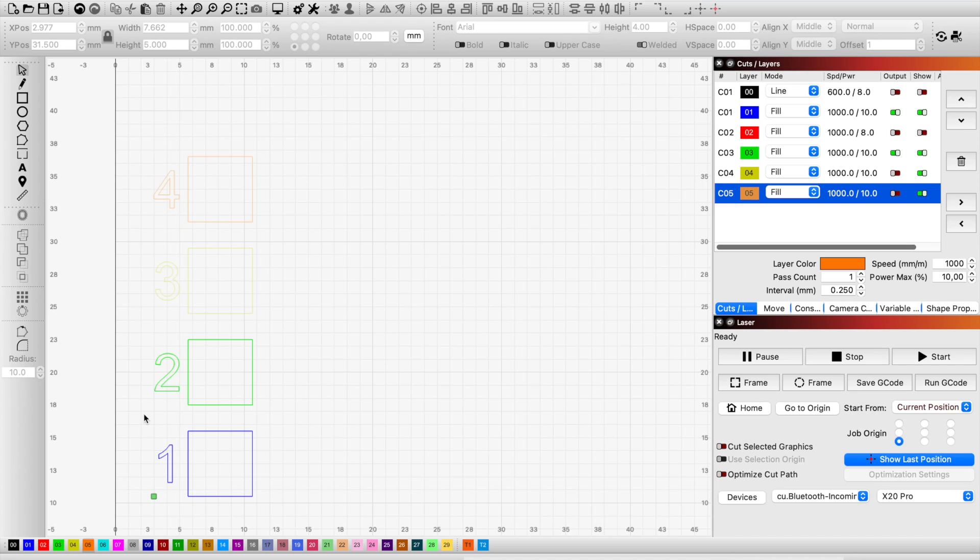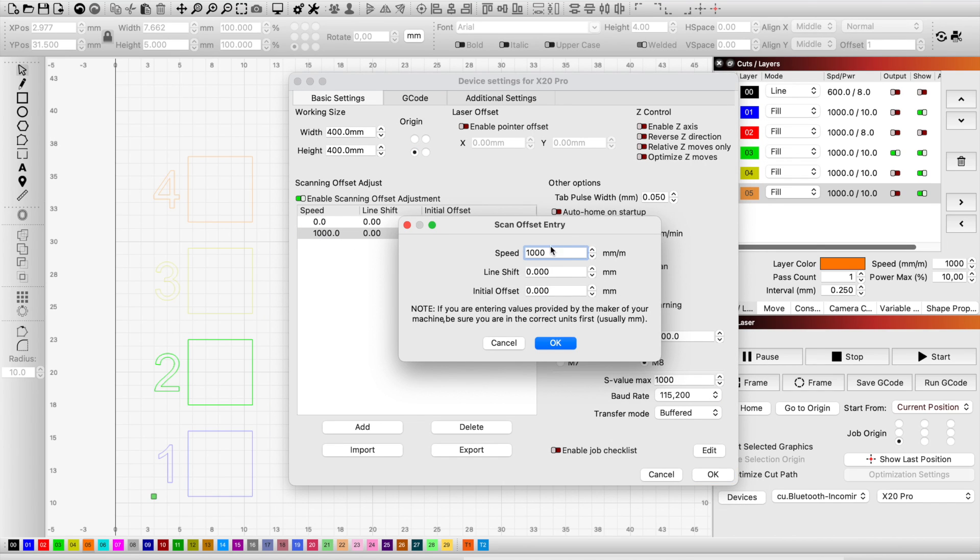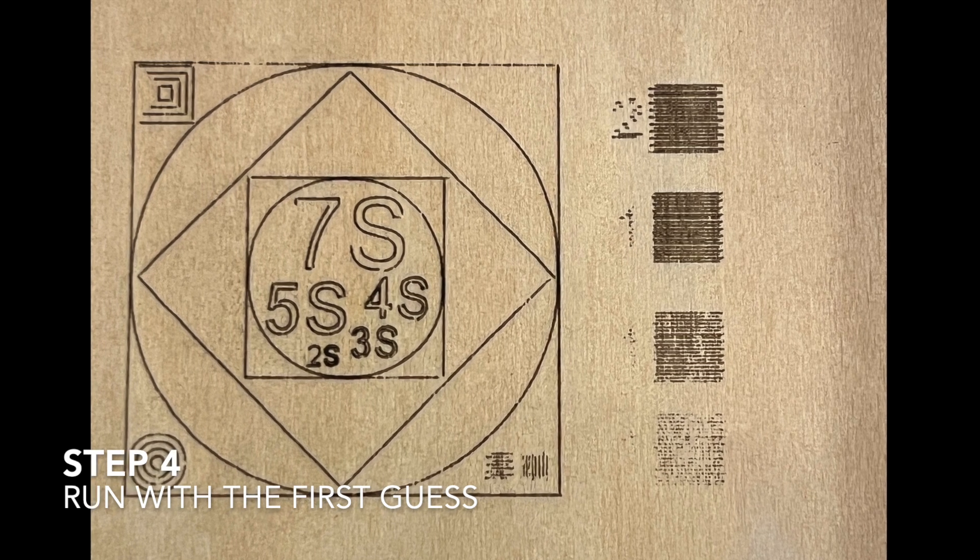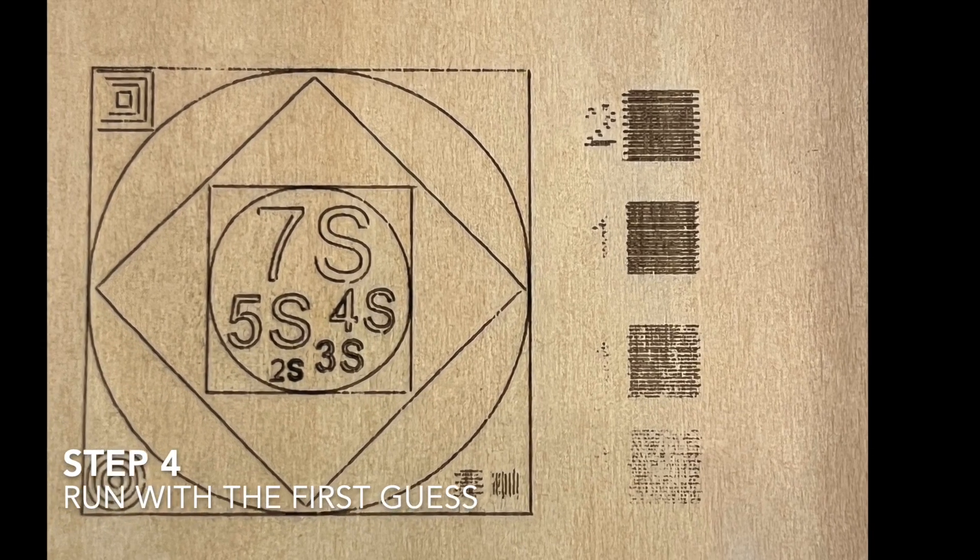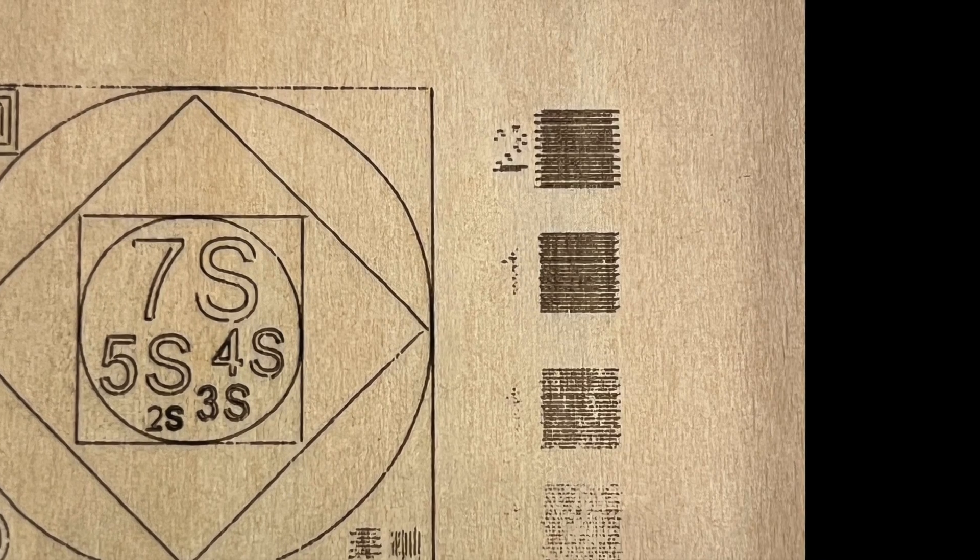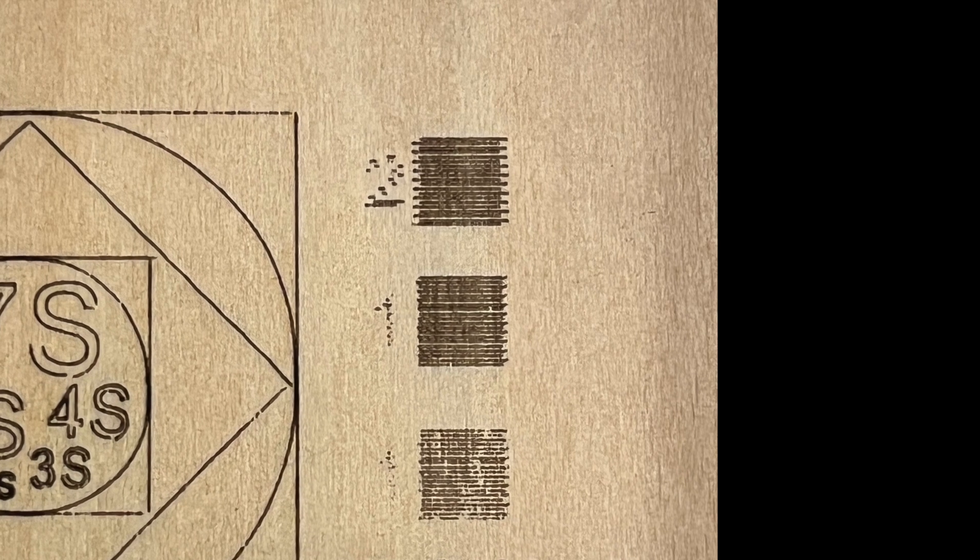For the second trial, go back and set the scanning offset for 1000 millimeter per second to minus 0.2 millimeter. Let's see if we can shift the lines 200 micrometers to the left. I saved the G-code and ran the file again. Now I look at the second trial - wow, it seems that the negative offset has shifted the first line further to the left and it has made our issue bigger.